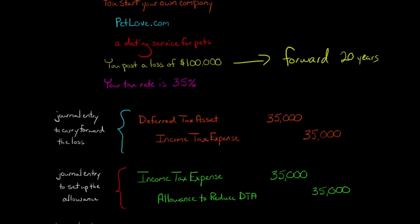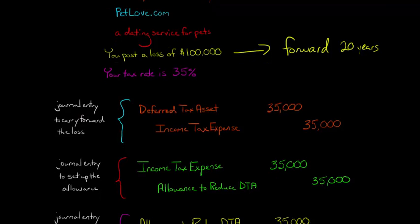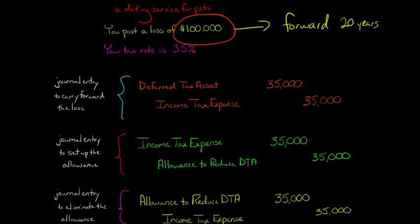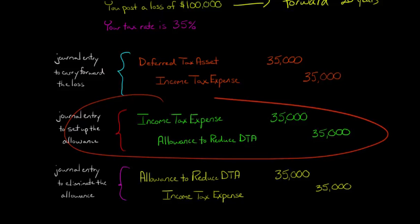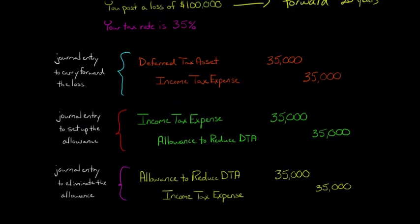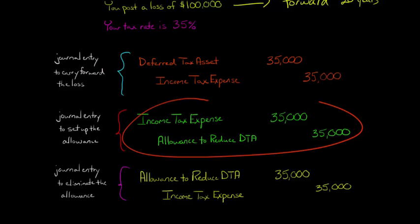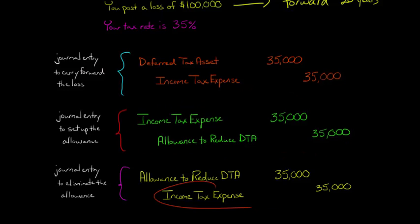Now let's say at some point in the future you actually have a profit, and you can use some of this loss to offset that profit so you don't have to pay tax on it. You already set up the valuation account assuming you'd never have taxable income — can you get that benefit back? Yes. You make a journal entry to eliminate the allowance account by reversing the original entry: credit Income Tax Expense for $35,000 and debit the allowance to reduce Deferred Tax Asset for $35,000.